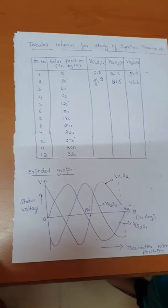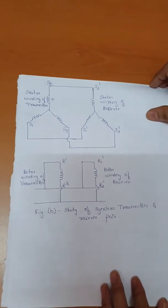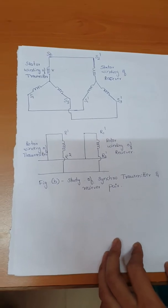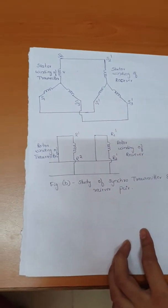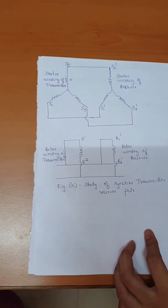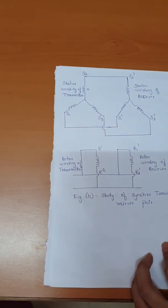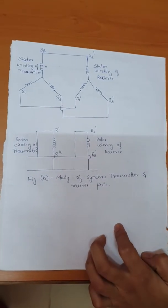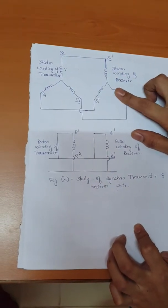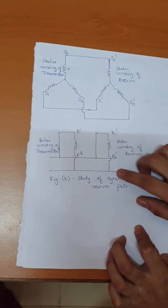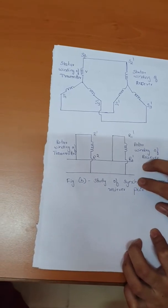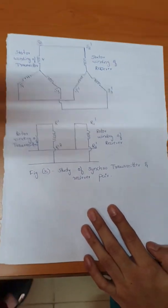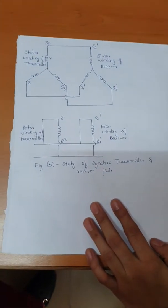Next, coming to the synchro transmitter and receiver pair. The receiver is basically the opposite of the transmitter. Here the input signal will be an electrical signal given to the stator winding, and it will be converted into a mechanical signal on the rotor side. So here we are going to give an electrical signal to the stator winding and that will be converted into a mechanical signal on the rotor side. This is what the synchro receiver does. Now in the next case we are going to do the combination of the synchro transmitter as well as the receiver.